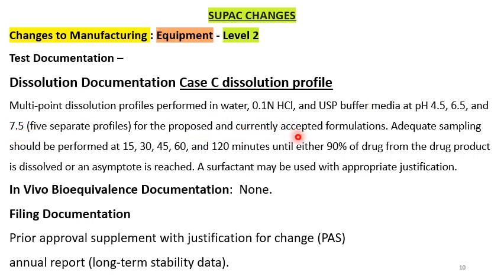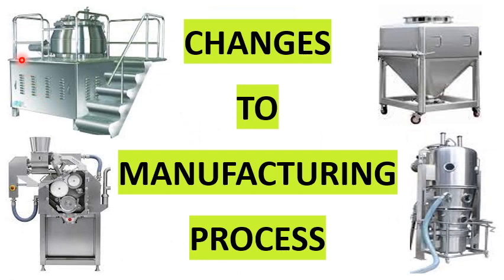Dissolution is required for both proposed and currently accepted formulations, with adequate sampling at 15, 30, 45, 60, and 120 minutes, until either 90% of the drug is released or an asymptote is reached. Surfactant may be used with proper justification. No bioequivalence is required. Filing documentation requires a Prior Approval Supplement (PAS) with justification for the change, since the operating principle is changing and may impact product quality and performance. Long-term stability data is reported in the annual report. In summary, for equipment changes there are only level 1 and level 2 categories.